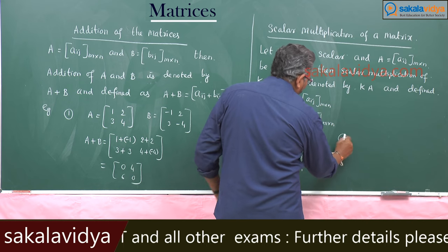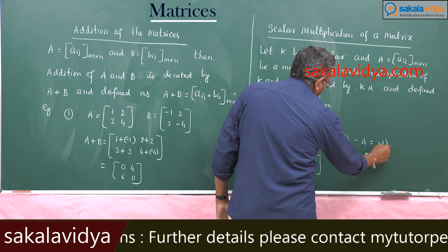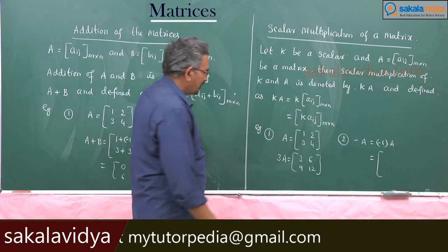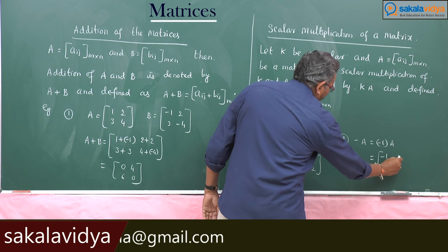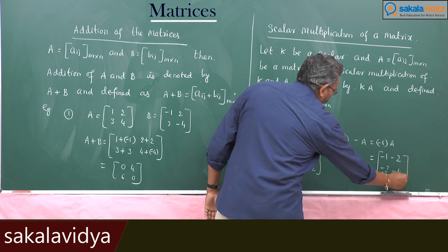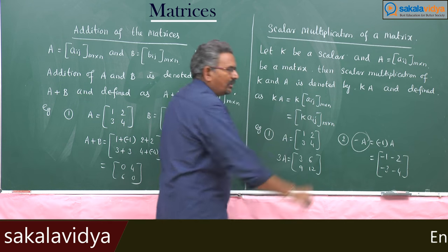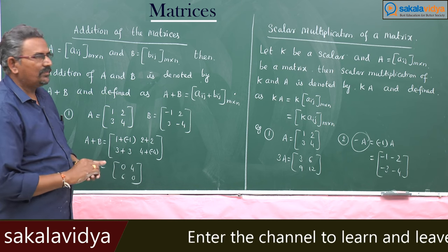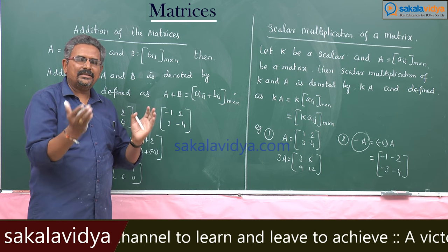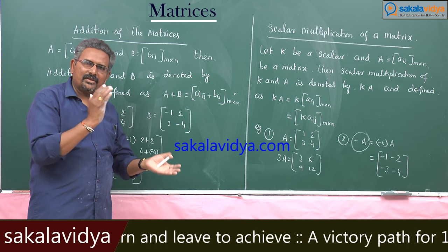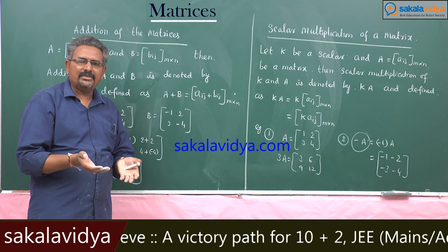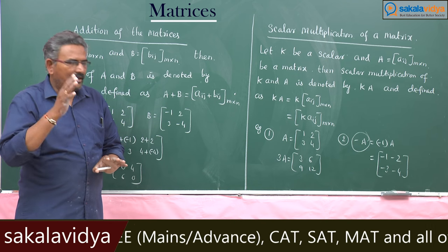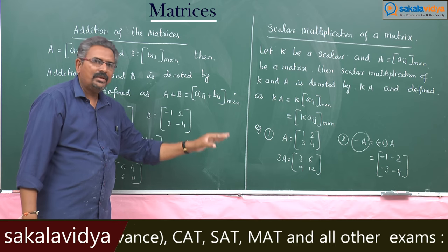Similarly, how to find out minus A? Minus A means minus 1 into A, that is equal to [-1, -2, -3, -4]. So, this minus A is called the additive inverse of A. If A is equal to [1, 2, 3, 4], the additive inverse of A is nothing but scalar multiplication of minus 1 with A, or minus A, that is [-1, -2, -3, -4].